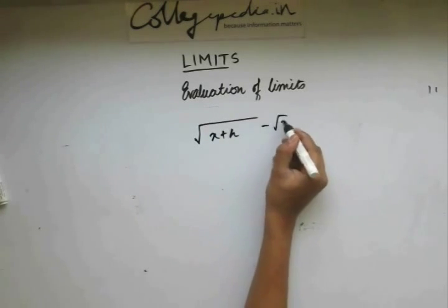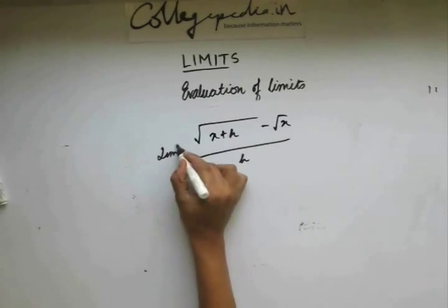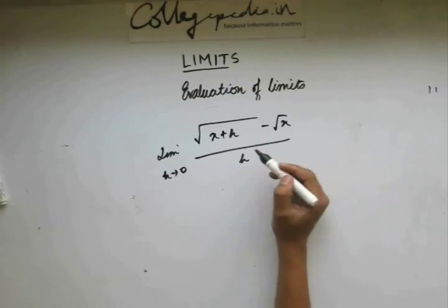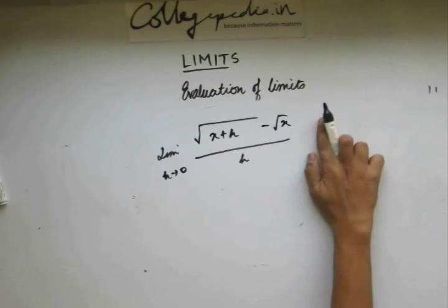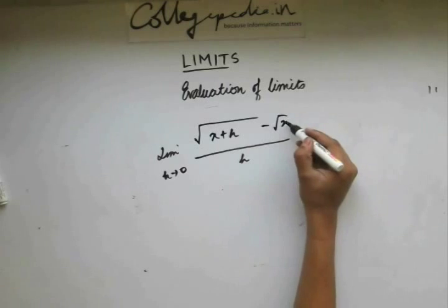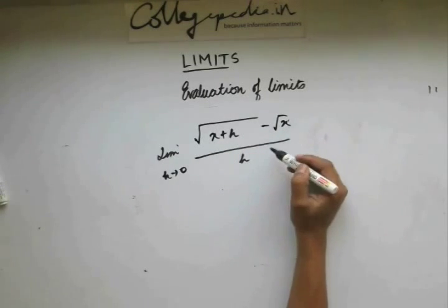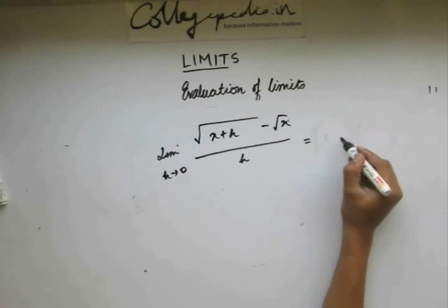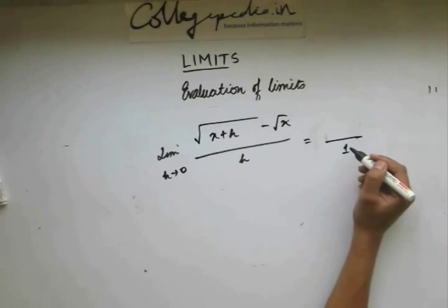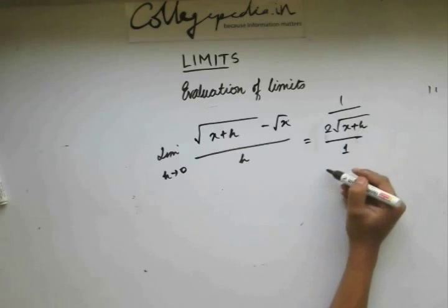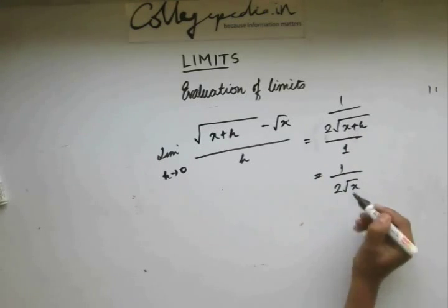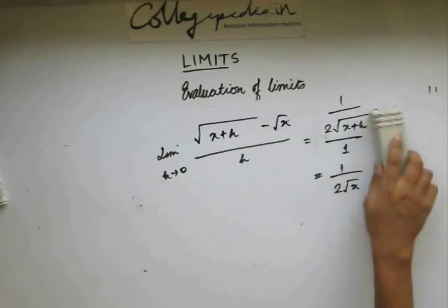Now let's take an expression that has square root terms. When you have such expressions, we go for rationalization. For example, evaluating the limit as h approaches 0 — putting h = 0 gives the 0/0 form. Using L'Hospital's Rule: differentiating the denominator with respect to h gives 1, and differentiating the numerator gives 1/(2√(x + h)). Putting h = 0 gives the answer 1/(2√x).